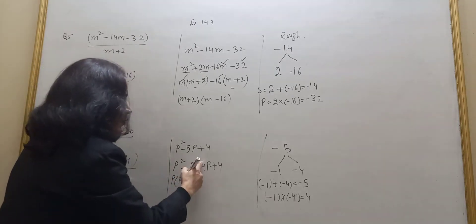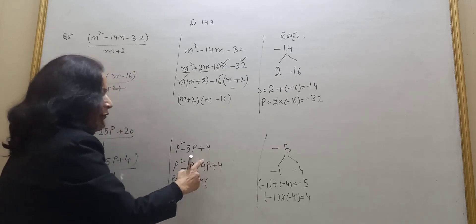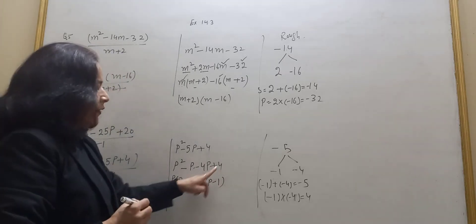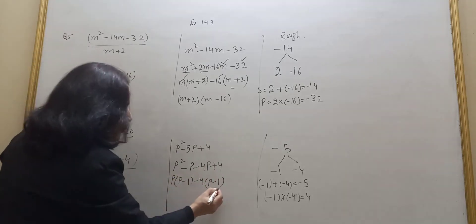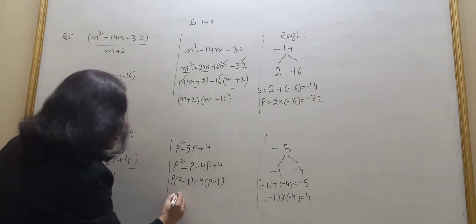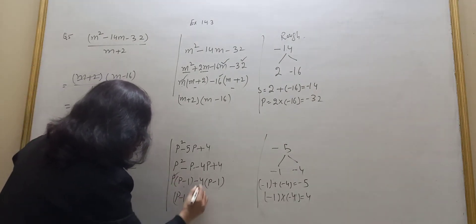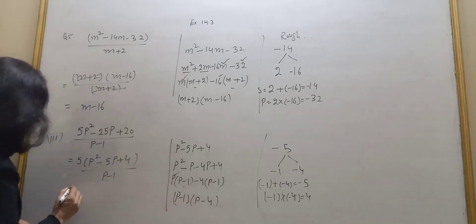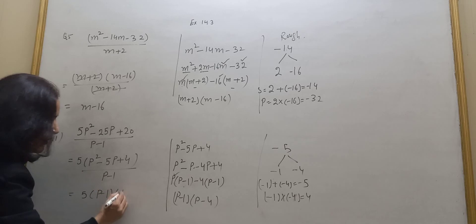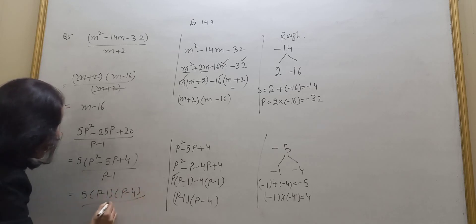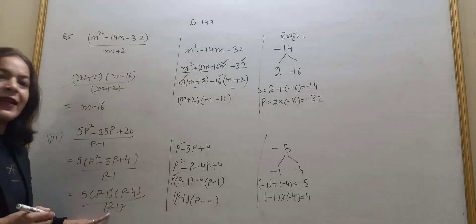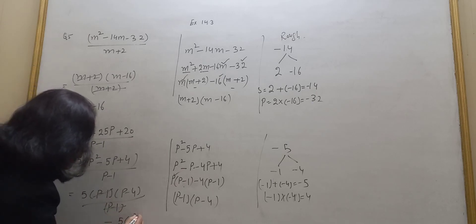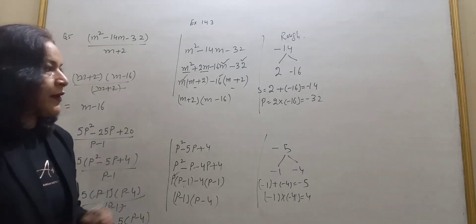Take minus common from the last two terms — 4 is common here as well. With minus taken outside, the sign changes inside, so p minus 1 remains. Take p minus 1 as the common factor: inside we have p from the first group and minus 4 from the second. So the factors are p minus 1 and p minus 4. Numerator is 5 into p minus 1 into p minus 4, denominator is p minus 1. They cancel, and your answer is 5 into p minus 4.